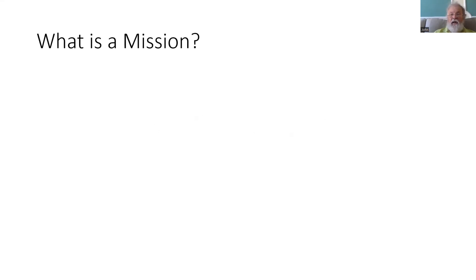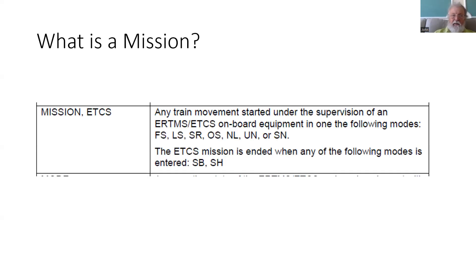Before we start looking at what end of mission is about, we need to be clear what a mission is. We're lucky that Subset 23, the glossary of terms, explains it quite clearly. An ETS mission is regarded as any train movement started under the supervision of an ERTMS on-board equipment in one of the following modes: FS full supervision, LS limited supervision, SR staff responsible, OS on-site, NL non-leading, UN unfitted, and SN system national.